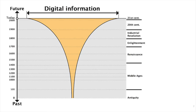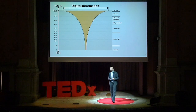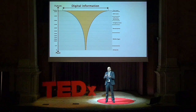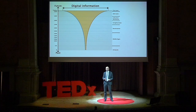Obviously, in the last 10 years we have many, many pieces of information. And obviously, the more we go in the past, the less information we have. If we want to build something like a Google Map of the past or a Facebook of the past, we need to enlarge this base — we need to make it like a rectangle. How can we do that?